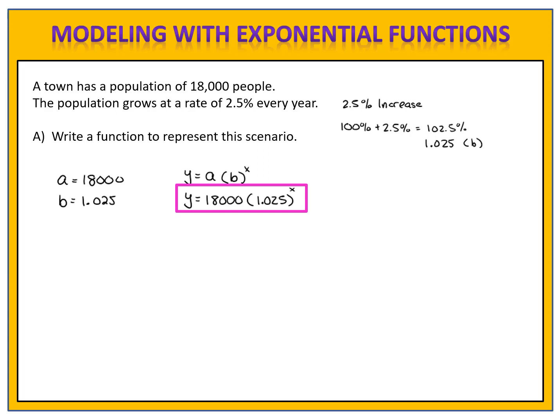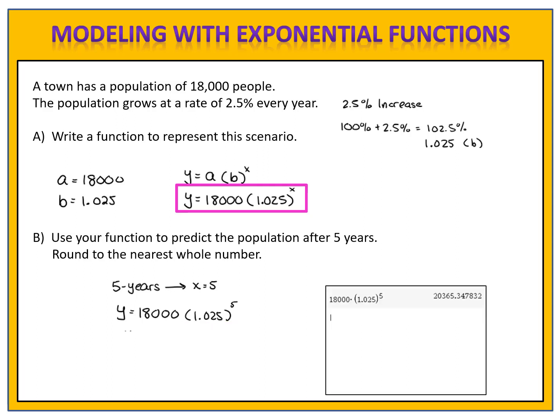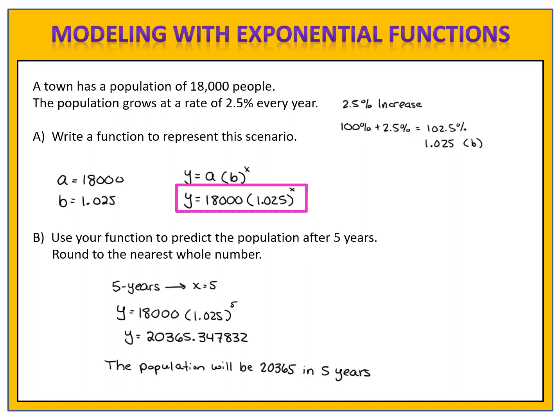Now we can write the equation: y equals 18,000 times 1.025 raised to the x power. This function can determine the population of the town after x years. Part b asks us to predict the population after 5 years, so x equals 5. We evaluate 18,000 times 1.025 to the 5th power on our calculator and get 20,365.347832. Rounded to the nearest whole number, the population will be 20,365 people in 5 years.